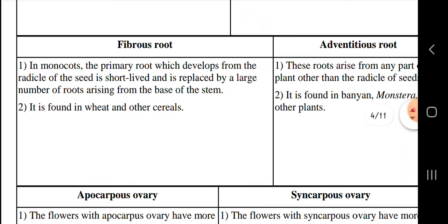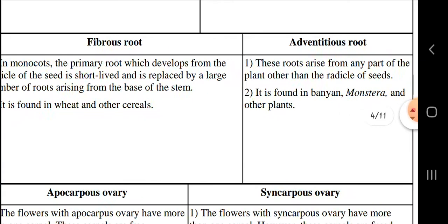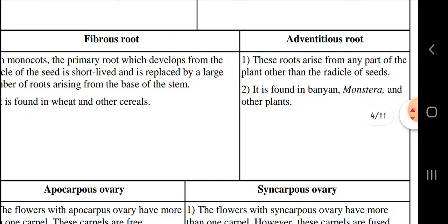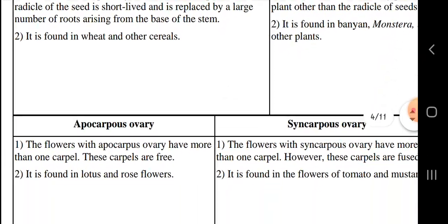In fibrous root, in monocots, the primary root which develops from the radicle of the seed is short-lived and is replaced by a large number of roots. Adventitious roots arise from any part of the plant other than the radicle of the seed.